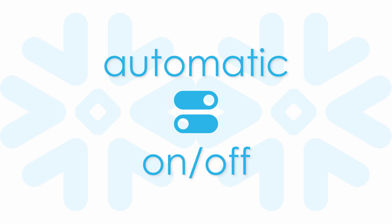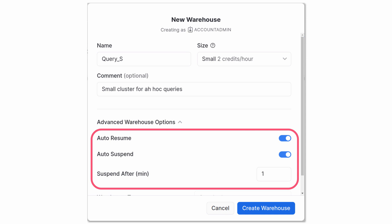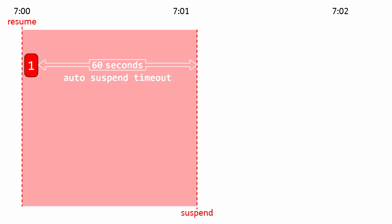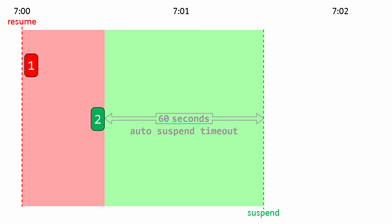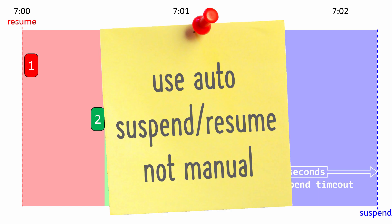Now let's look at how automated features can help. When creating a new cluster, you can turn on the Auto-Resume and Auto-Suspend options and set a low Suspend After value. When a user submits a query, the sleeping cluster automatically wakes up. After the query completes, if there is no activity for 60 seconds, it will automatically go back to sleep. If another query gets submitted before the Auto-Suspend timeout, it can run immediately, and the timeout period gets reset. We pay for this contiguous period of uptime, but there is no double charging. A good guardrail is to use automated features to wake clusters up and put them back to sleep.